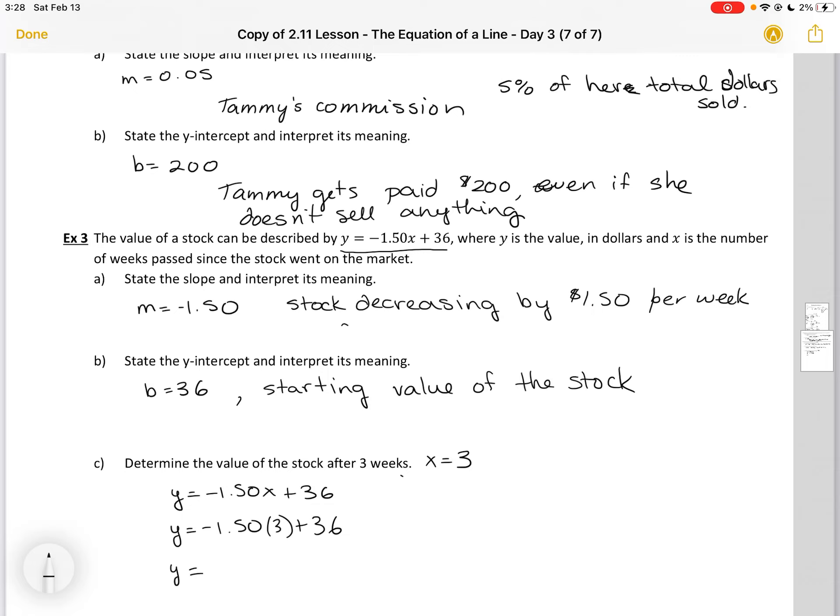I can substitute in three for x, and then I can evaluate. Three times $1.50 would be minus $4.50, and then I would add those two together. The value of the stock after three weeks is $31.50, a lower value.